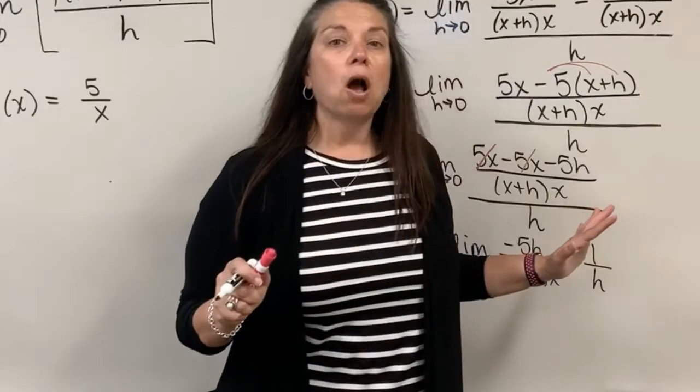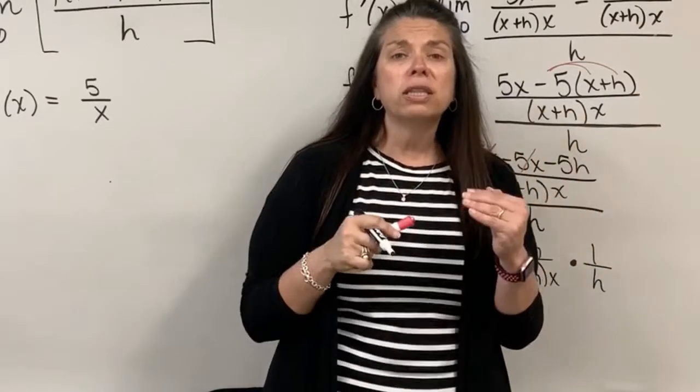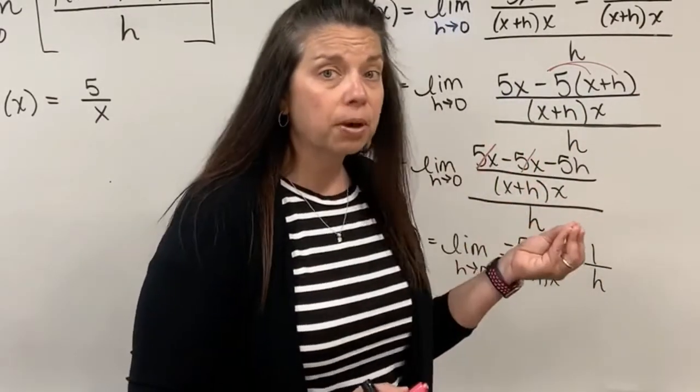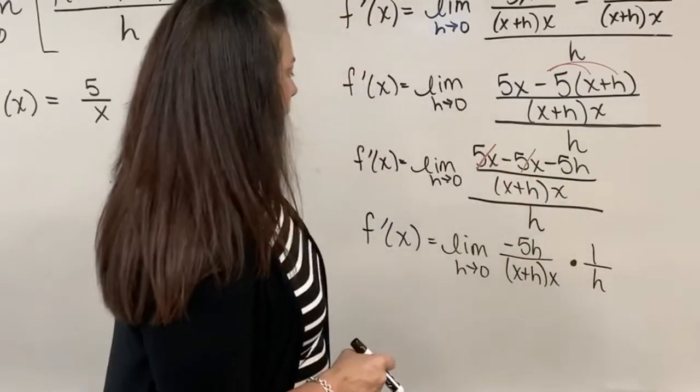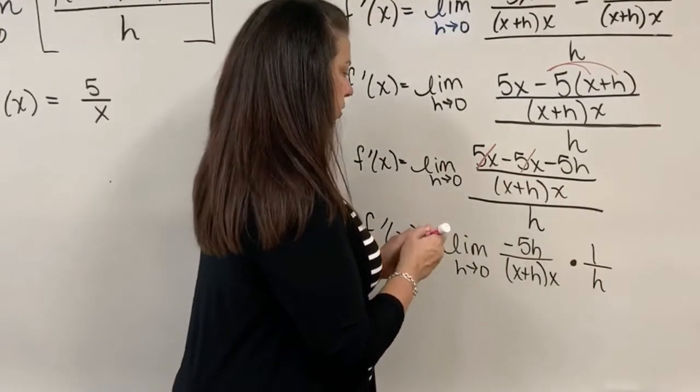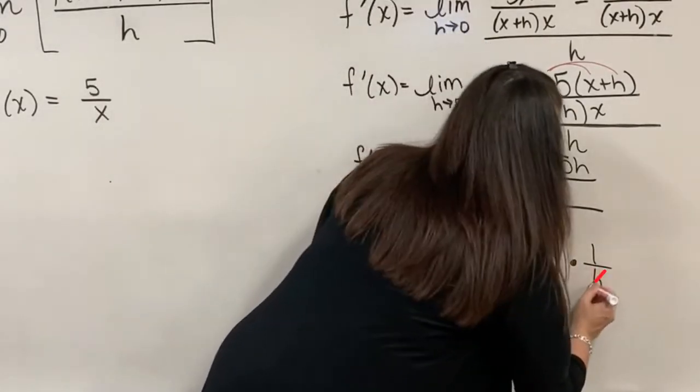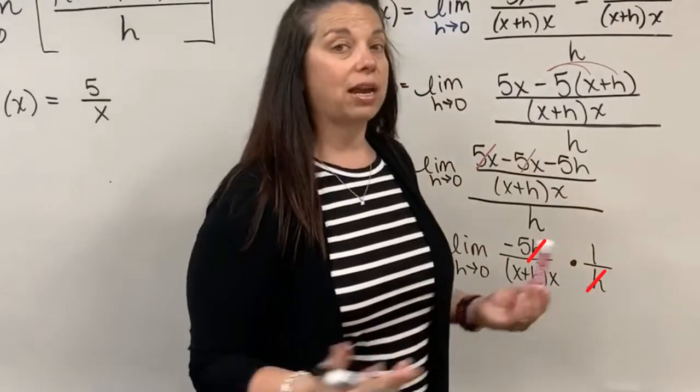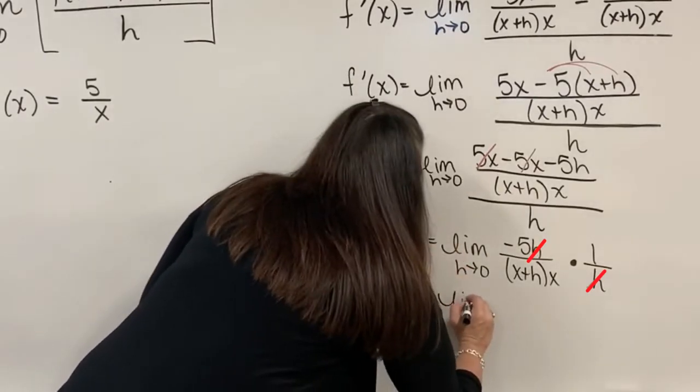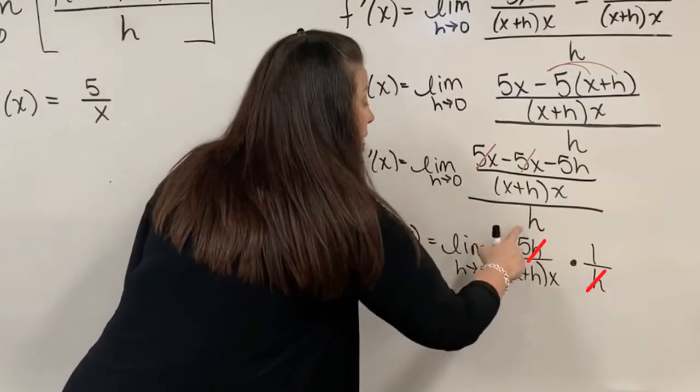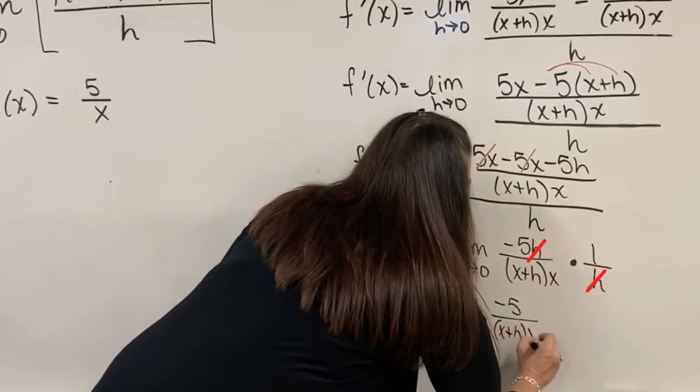And that is the same thing that we've been doing all along with just numbers. If you took 5 divided by 1 half, for example, you would turn that division problem into a multiplication problem and multiply by the reciprocal of that denominator 1 half. So same idea for this. And that is very advantageous for us to do this because now hopefully we recognize that this h next to that negative 5 and the h down here in this denominator actually divide out. So what I have left is f prime of x is equal to the limit as h approaches 0 of now I have just negative 5 in the numerator divided by this denominator x plus h times x.